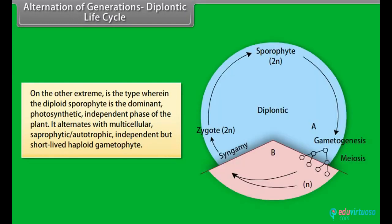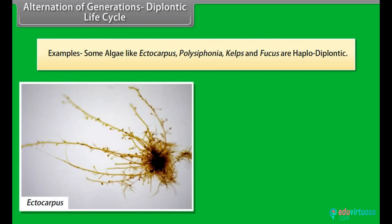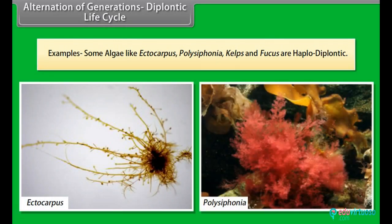Diplontic life cycle: On the other extreme is the type wherein the diploid sporophyte is the dominant, photosynthetic, independent phase of the plant. It alternates with a multicellular, saprophytic, autotrophic, independent but short-lived haploid gametophyte. Examples: some algae like Ectocarpus, Polysiphonia, kelps, and Fucus are haplodiplontic.